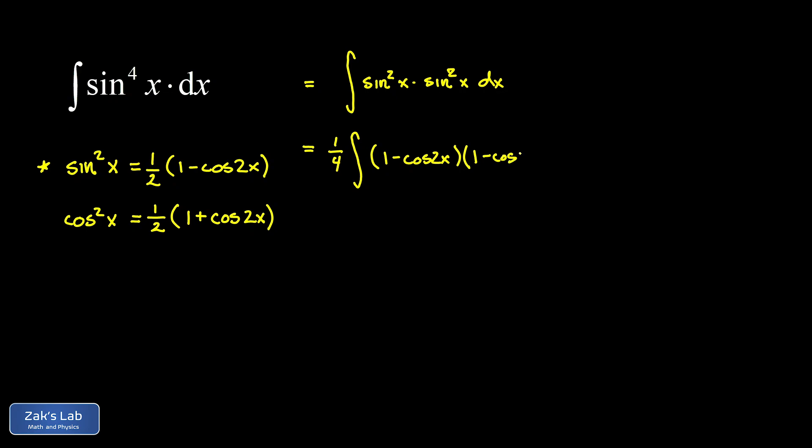Inside of our integral we get a one minus cosine 2x multiplied by another one minus cosine 2x. Now we just go ahead and expand this product. We're going to get four terms out of that, but the cross terms are like terms. We have one times one giving us one.